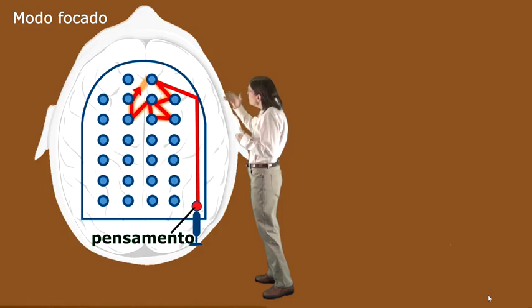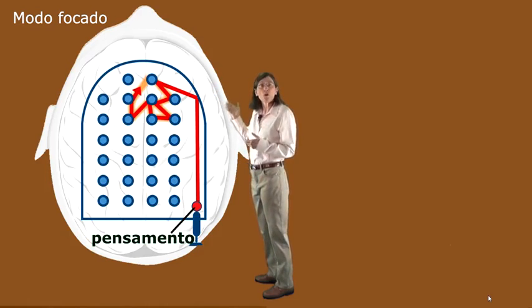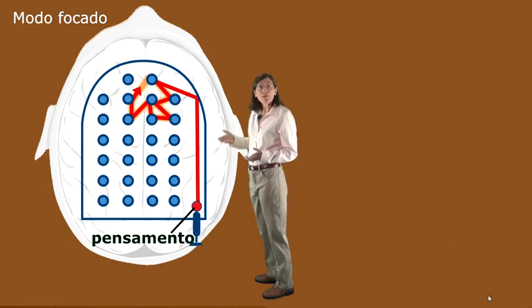Look at how that thought moves smoothly around on the fuzzy underlying orange neural pathway. In some sense, it's as if it's traveling along a familiar, nicely paved road.